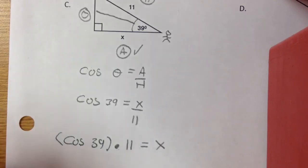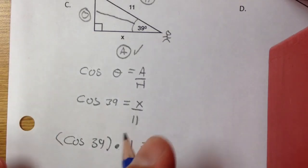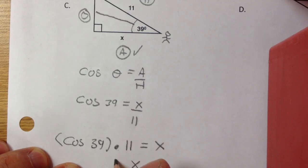So if I do that, I go cos 39, press equals, times it by 11, and press equals again. I get X equals 8.5. And that's it, you're done.